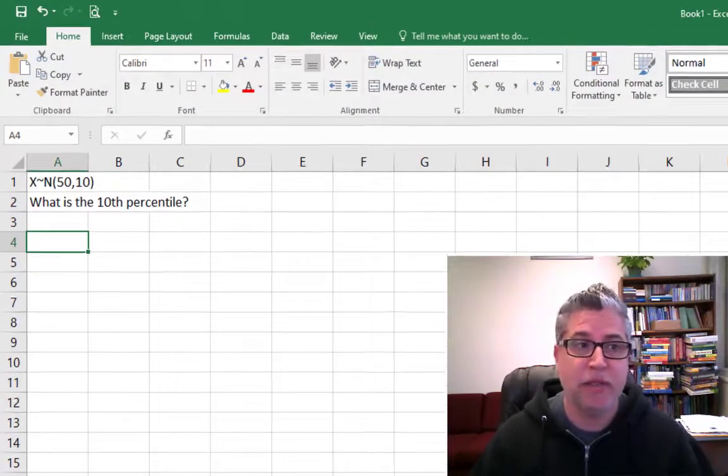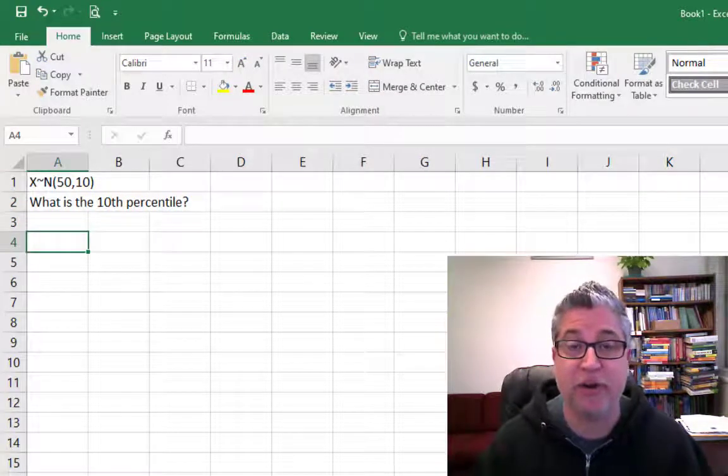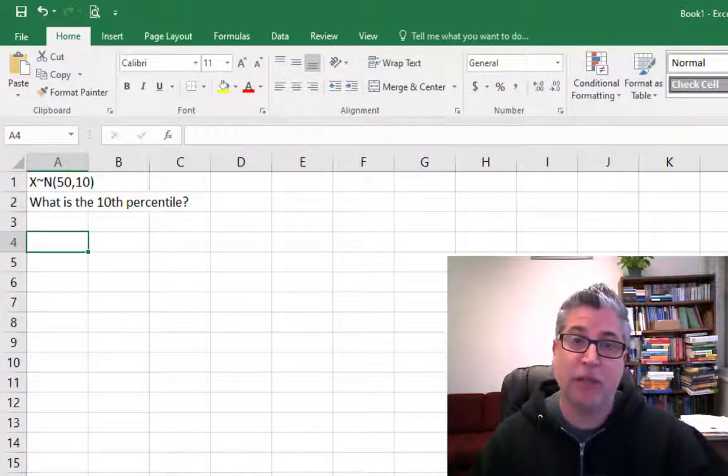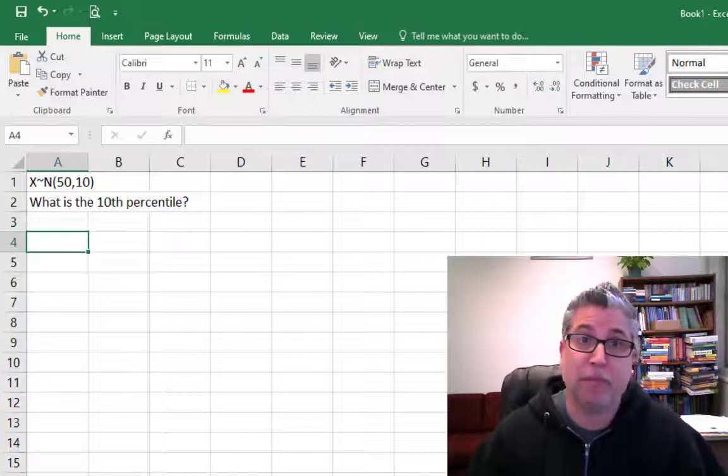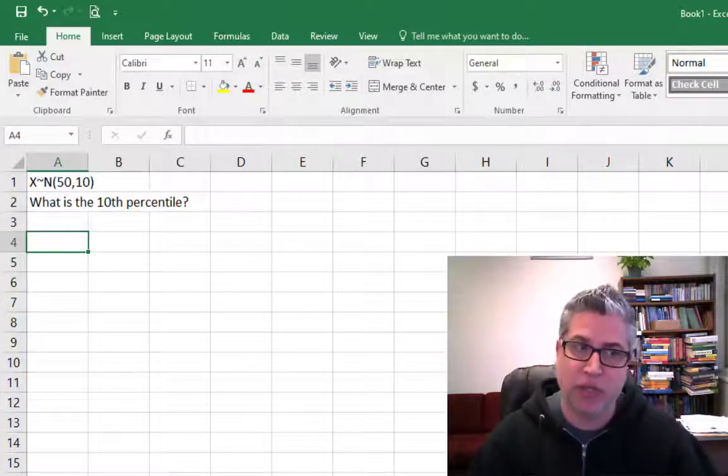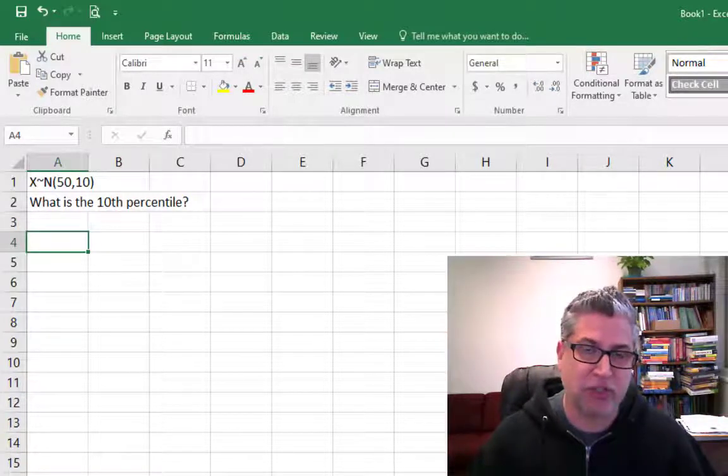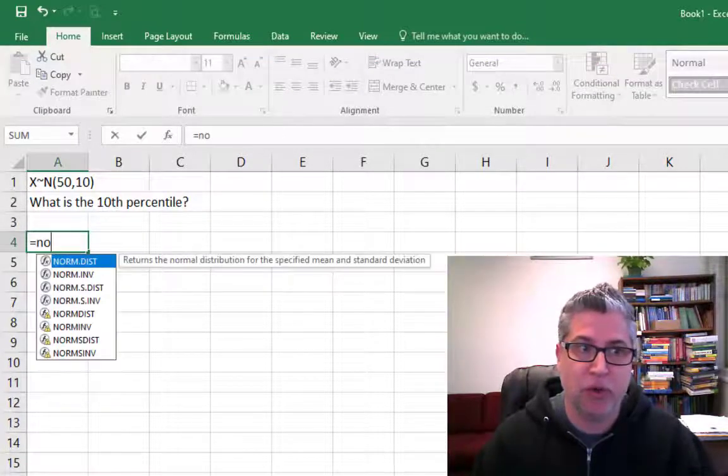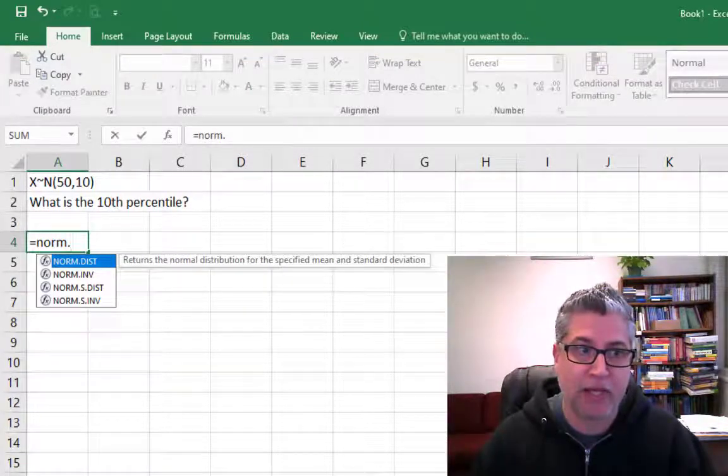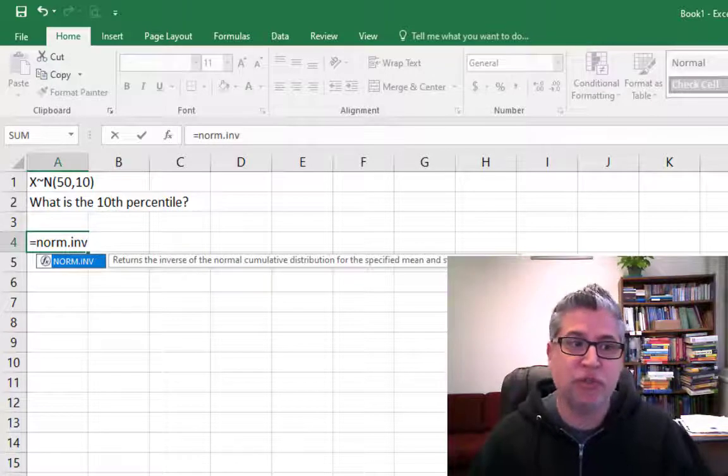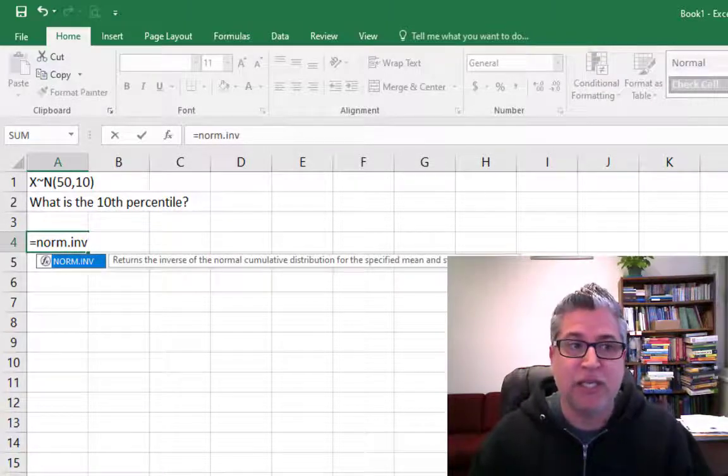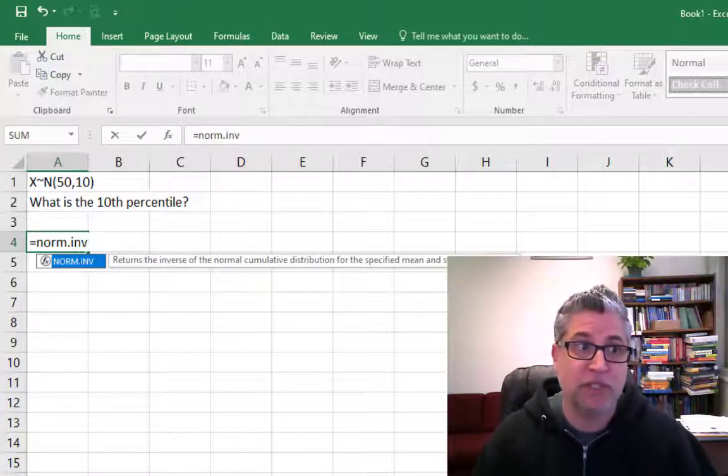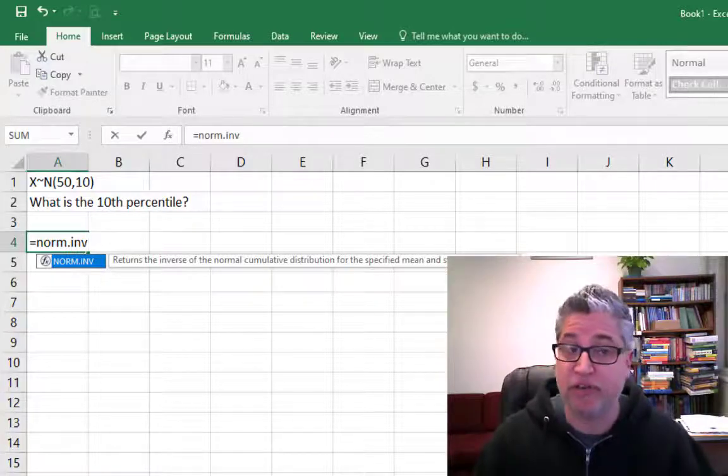Okay, so how do we find the tenth percentile from a non-standard normal? The teacher is giving you the 10%, so you need to provide the particular test score. We're doing an inverse calculation. So norm dot inverse. And this time we don't do dot s dot inverse because this isn't a standard normal. This is a normal with a mean of 50 and a standard deviation of 10.